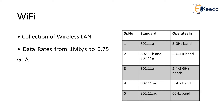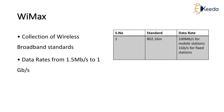802.16 is a collection of wireless broadband standards, including a description of WiMAX. Data rates range from 1.5 Mbps to 1 Gbps per second. The standard 802.16m provides 100 Mbps for mobile stations and 1 Gbps for fixed stations. This is the recent WiMAX standard developed by IEEE.